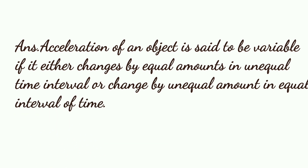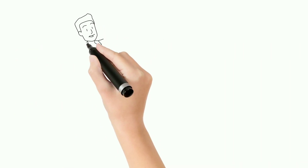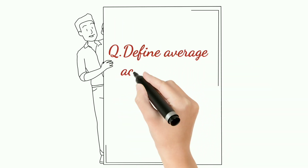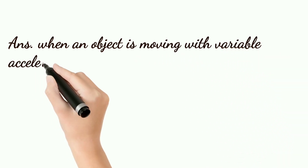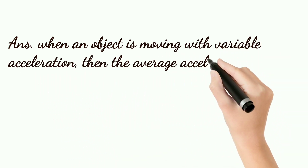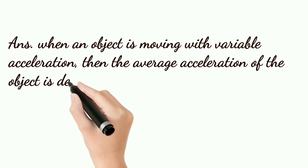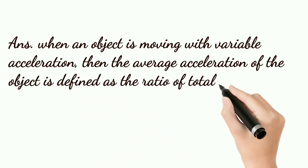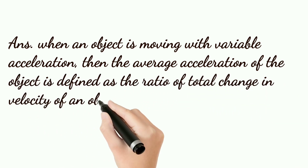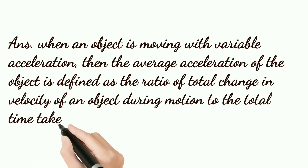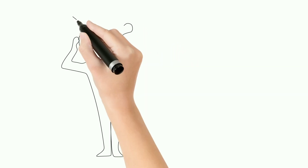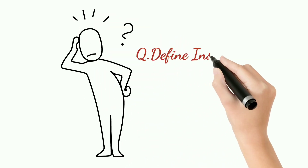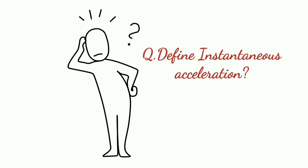Define average acceleration. When an object is moving with variable acceleration, the average acceleration of the object is defined as the ratio of the total change in velocity of the object during motion to the total time taken.